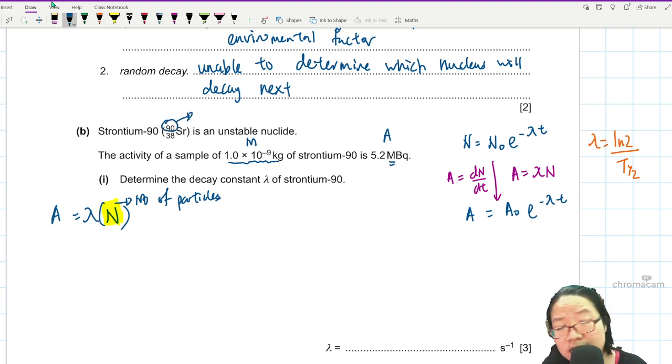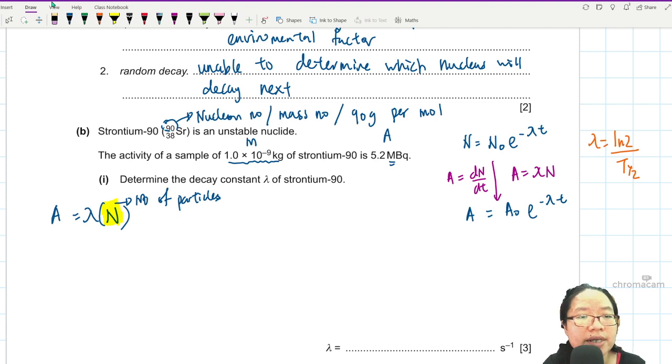This 90 is normally known as nucleon number or mass number or 90 gram per mole. So chemistry has standardized their numbering such that when I see 90, I know a lot of things. I know that there are 90 protons plus neutrons inside the nucleus. I recall this the mass number as well because I know it has 90 gram for every mole. What is 1 mole? 1 mole is equivalent to N of Avogadro constant 6.02 times 10 to the power of 23.